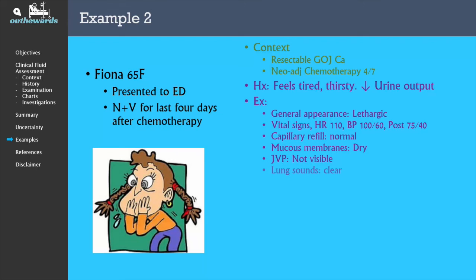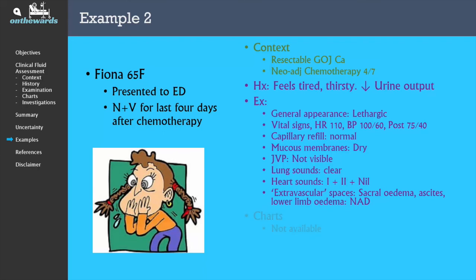You aren't able to see her JVP. Her lungs are clear, she has normal heart sounds, and there is no oedema noted in the extravascular spaces. Since she has just arrived to the emergency department, she has no charts available for you to review. Blood tests from the day before chemotherapy compared to today reveal that her creatinine has doubled and she is hypokalemic.